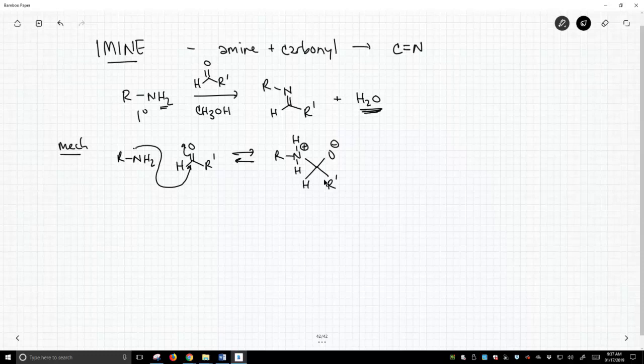So we attack the carbonyl. We get a tetrahedral intermediate of sorts. And we're in methanol, so we can protonate this tetrahedral intermediate. And that gets us to here. Now remember, I said we're going to form water as our product. So we need to get rid of this OH group.